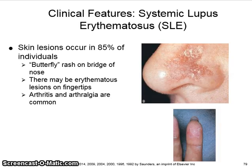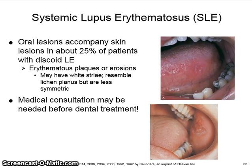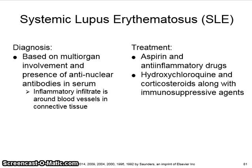Clinical features of SLE include skin lesions, which occur in 85 percent of individuals. There is a butterfly rash on the bridge of the nose, erythematous lesions on the fingertips, and arthritis and arthralgia are common. Oral lesions accompany skin lesions in about 25 percent of patients. With discoid LE, erythematous plaques or erosions may have white striae resembling lichen planus but are less symmetrical.